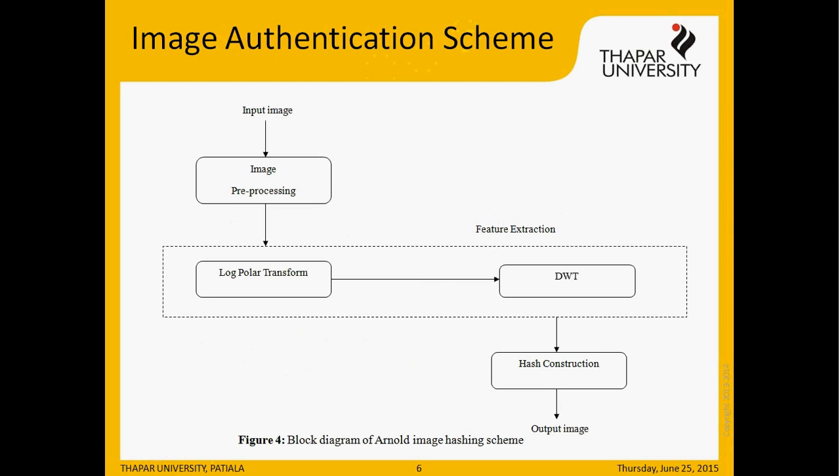This hash matrix is transmitted with the original image. At the receiver end, the receiver applies the same process on the image. If the hash matrices of both images are the same, then there has been no tampering with the image; otherwise, there is some tampering with the image.